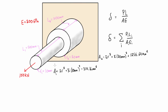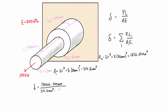Now we have all the information we need: the cross-sectional area for each section, the length of each section, the internal force — which is 150 kilonewtons throughout — and the modulus of elasticity. So for the total deformation, the first section gives us 150 kilonewtons times 500 millimeters, divided by 314.16 millimeters squared times 200 gigapascals.